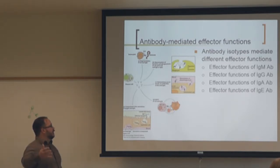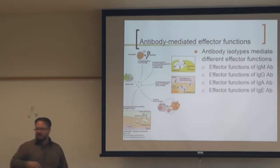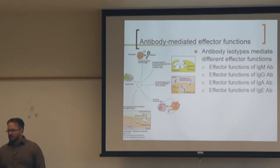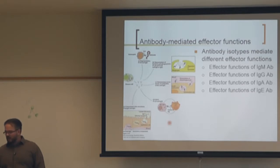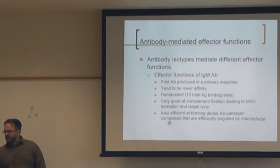FC receptors on NK cells effectively give them a specific response against anything bound to antibody — this functions through IgGs. FC receptors also play a role in transcytosis, helping secrete IgA into secretions. IgM can also function through this system.